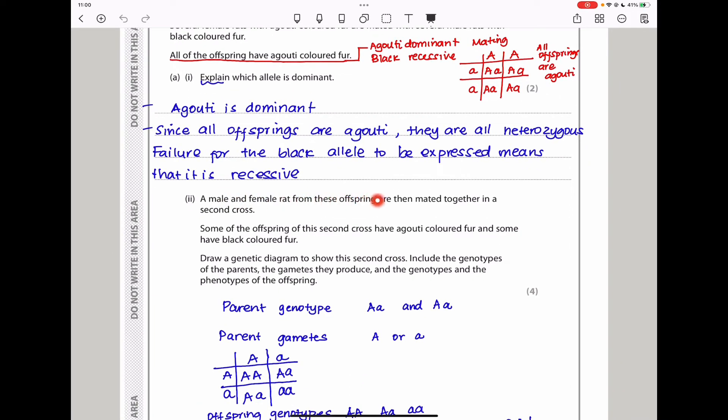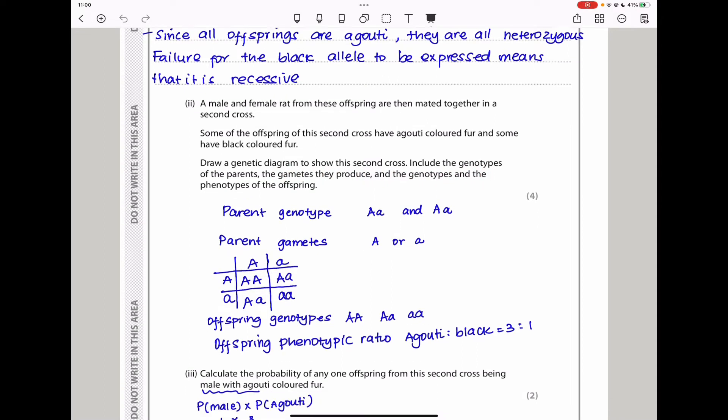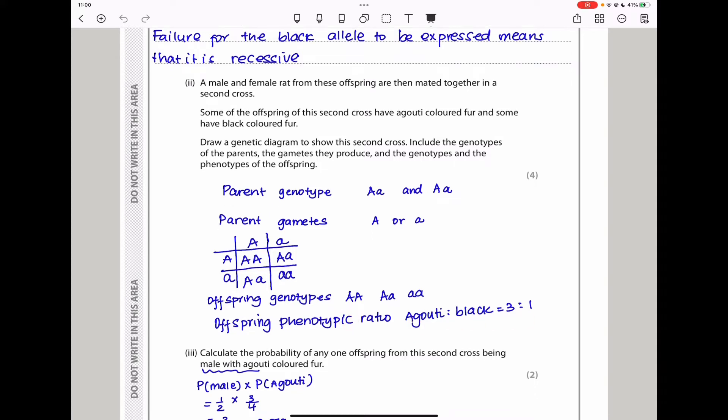Next, a male and female rat from these offspring are then mated together in a second cross. So meaning we are mating heterozygous now. Some of the offspring of this second cross have agouti colored fur and some have black colored fur. They want us to draw a genetic diagram to show this second cross. Since all parents are going to be heterozygous, the genotypes of the parents is that and that, meaning the gametes produced by the parents are either this or that. Looking at this genetic cross, the possible offspring were that, that, that, and that. So the offspring genotype is going to be capital A capital A, or capital A small a, or small a small a. And the offspring phenotype is going to be in a ratio of 3 to 1, agouti to black.